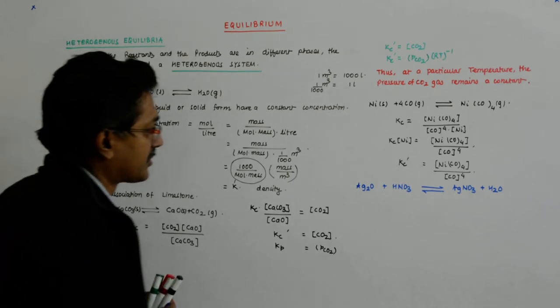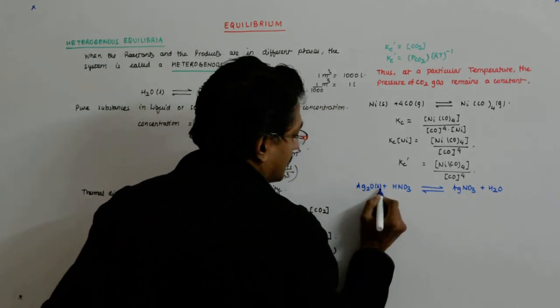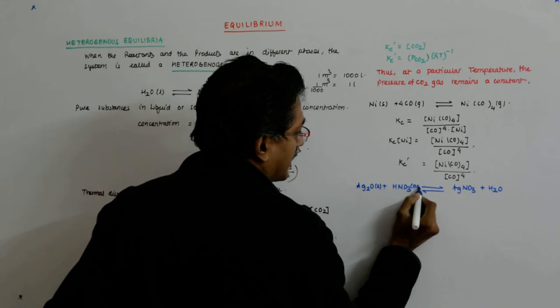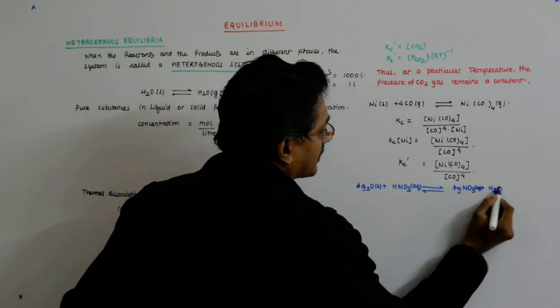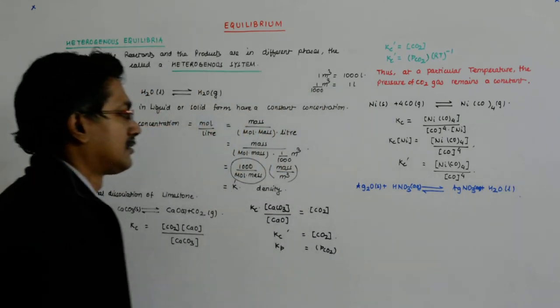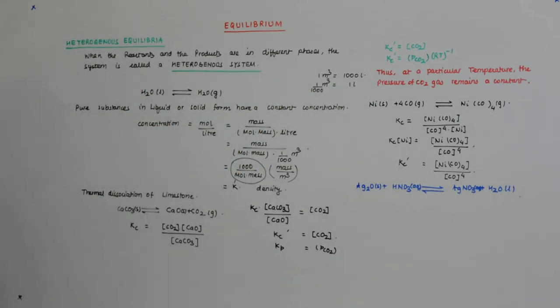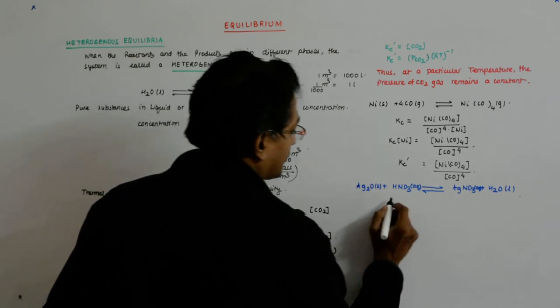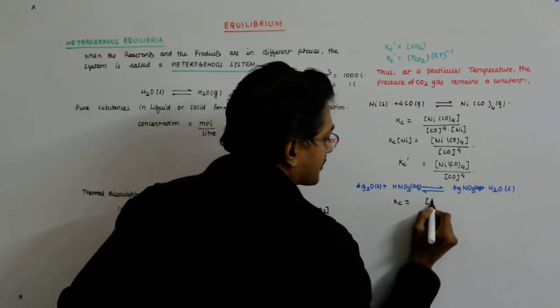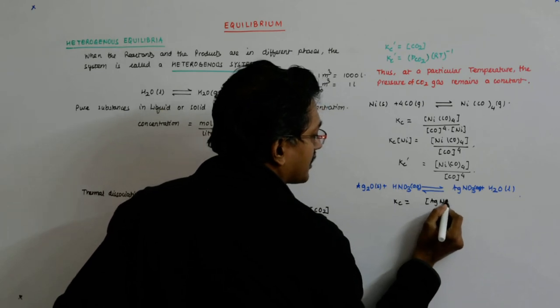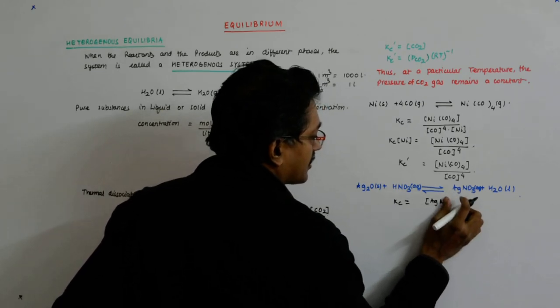Here this is a solid, this is aqueous, this is aqueous, and this is liquid. So again the same thing happens. Your Kc becomes equal to the concentration of AgNO3 into concentration of H2O upon Ag2O into HNO3, not yet balanced.